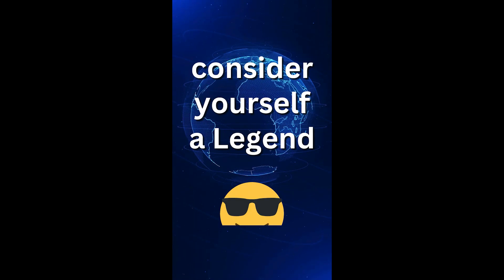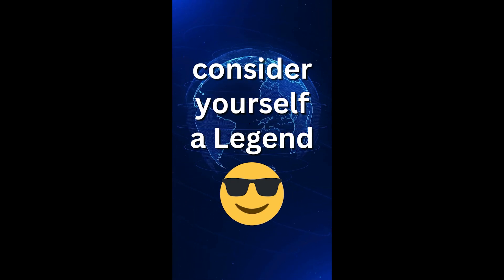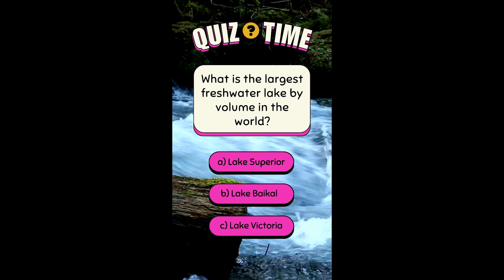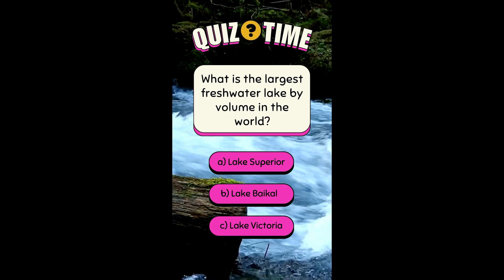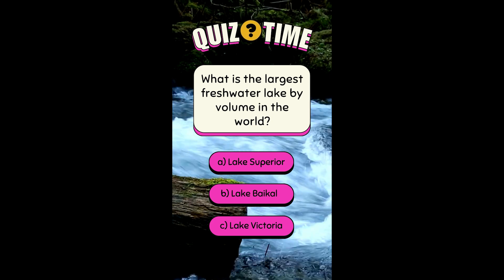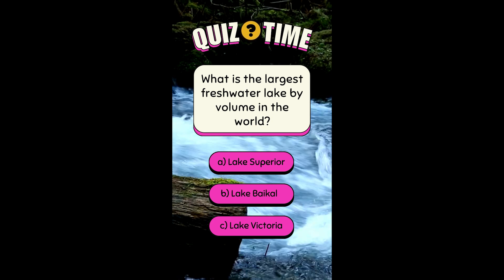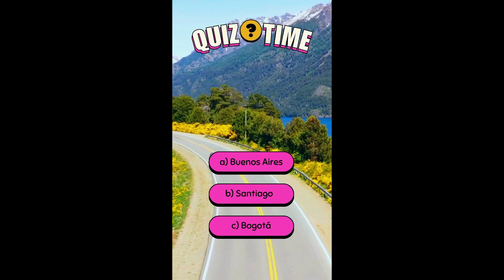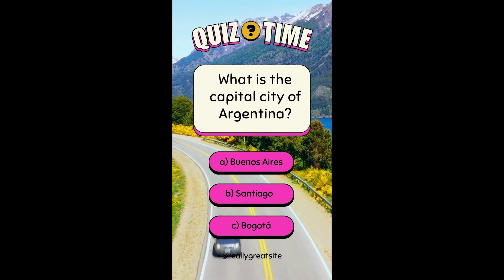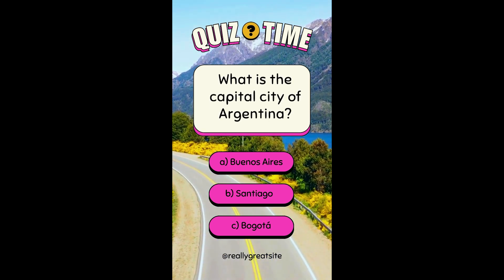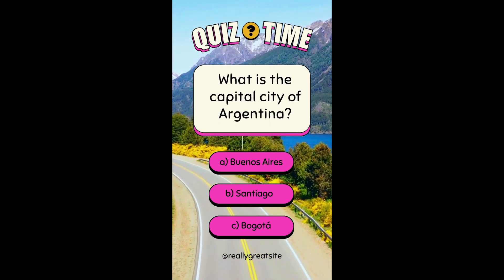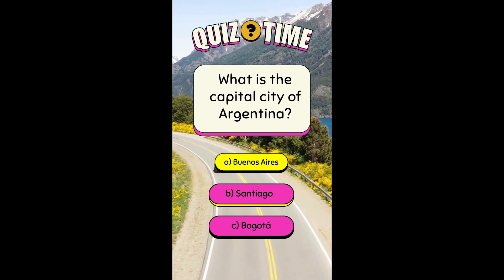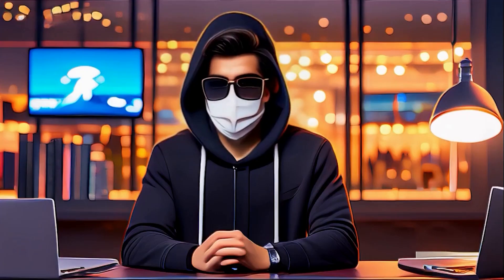Get 10 of 10 and consider yourself a legend. What is the largest freshwater lake by volume in the world? A: Lake Superior. B: Lake Baikal. C: Lake Victoria. The right answer is Lake Baikal. What is the capital city of Argentina? A: Buenos Aires. B: Santiago. C: Bogota. The right answer is Buenos Aires. The video has turned out quite well.